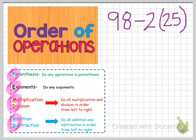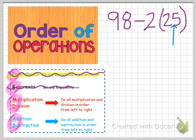Our first step tells us to do parentheses — that means we're only doing anything inside of the parentheses. I do have parentheses in my problem, but if I look inside I just see the number 25; it's already simplified, so there's nothing to do inside there. My next step tells me to look for exponents, but there are no exponents in my problem, so I can cross off that step. That brings me to multiplication and division — I do all multiplication and division in order from left to right, just as if I were reading a sentence.